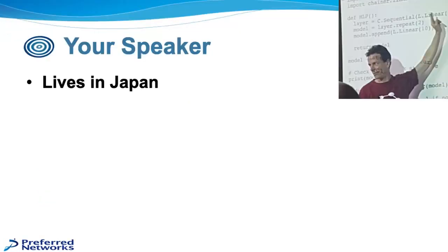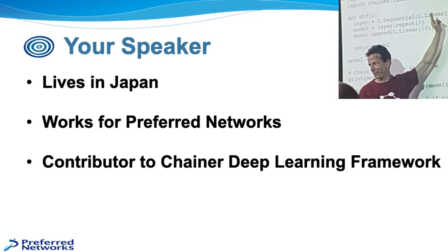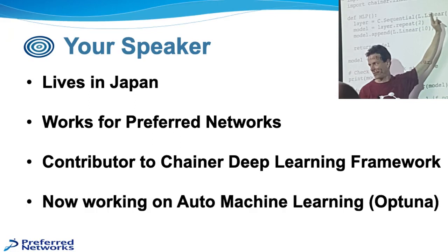I actually do live here in Japan, and I have been working for Preferred Networks, which is a deep learning company here in Japan, which also is very involved in open source. Previously, I was a contributor to the Chainer Deep Learning Framework, which some of you might be familiar with. It was a precursor to PyTorch. But now I'm working on auto-machine learning, and specifically in Optuna for tuning hyperparameters.